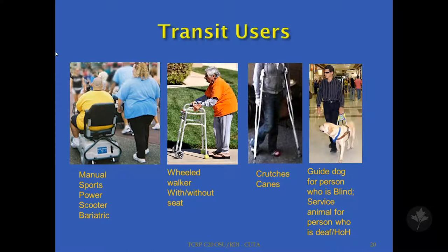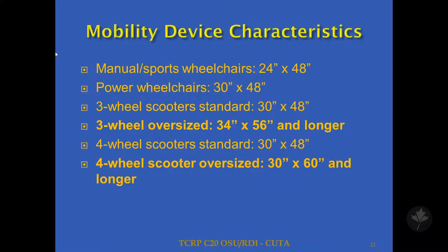This is a cross-section of transit users we identified. Starting on the left we have passengers using manual wheelchairs, sports chairs, power chairs, scooters, and bariatric chairs. Bariatric chairs typically refer to wider chairs for people who are obese and heavier. The second picture shows the wheeled walker, which can be used with or without a seat. Then people on crutches and canes, and the last picture shows a person with a guide dog — a person who is blind. We can also have service animals for persons who are deaf or hard of hearing.